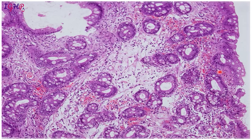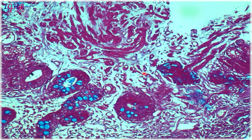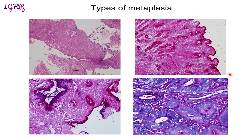Intestinal metaplasia is classified into complete and incomplete metaplasia. On the Alcian blue stain, goblet cells take up the acidic Alcian blue mucin — goblet cells are filled with acidic mucin and on Alcian blue stain they appear as blue colored cells. This blue staining is specific for goblet cells.